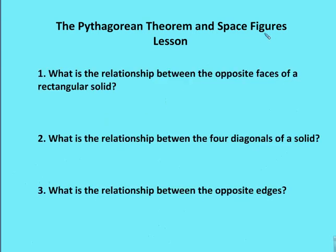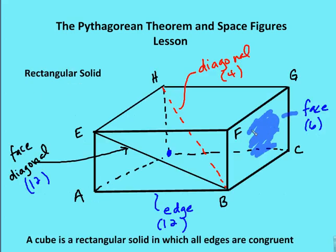Let me give you a quick quiz. What is the relationship between the opposite faces of a rectangular solid? The answer: opposite faces are going to be congruent and parallel. So for example, face FGCB and the opposite face EHLA are congruent and parallel.